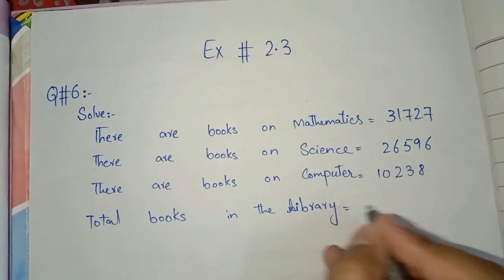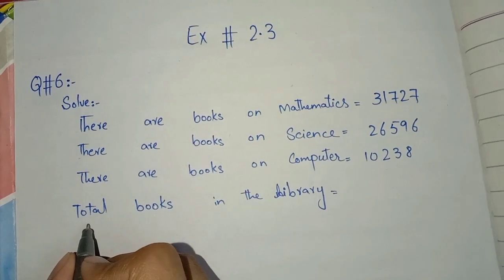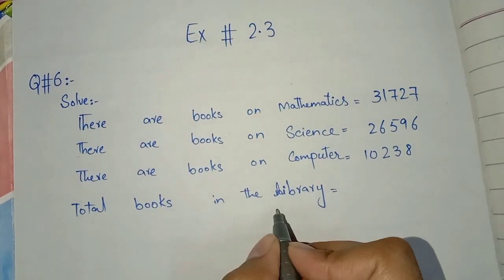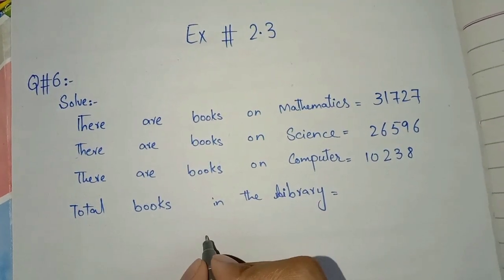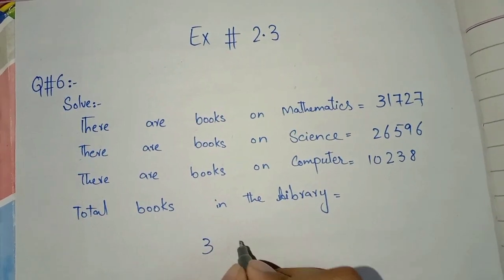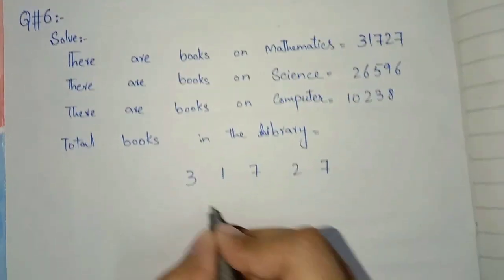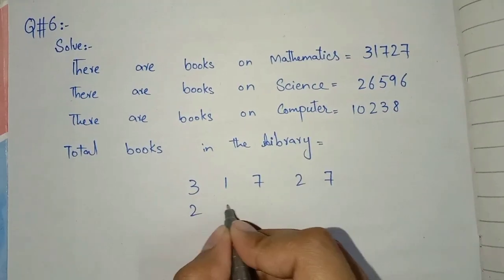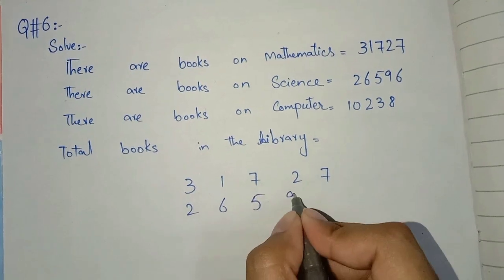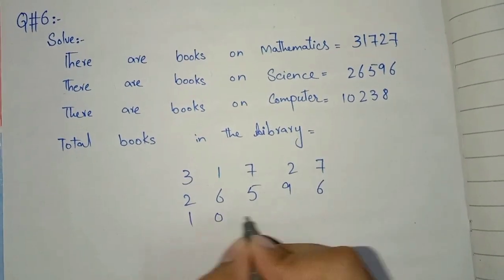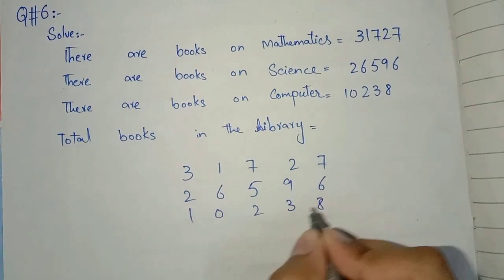Now we will add the total books. We will add the total books. The numbers are: 31,727 plus 26,596 plus 10,238.